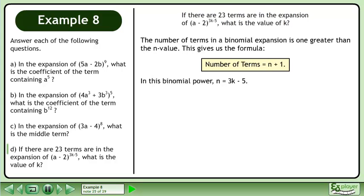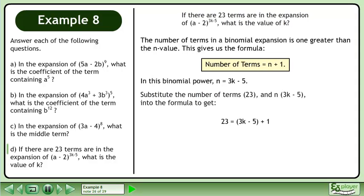In this binomial power, n equals 3k minus 5. Substitute the number of terms, 23, and n into the formula to get 23 equals 3k minus 5 plus 1. Simplify. Add 4 to both sides. The answer is k equals 9.